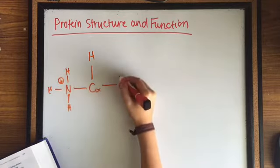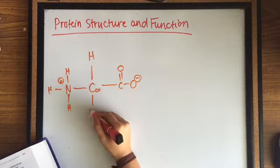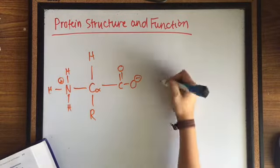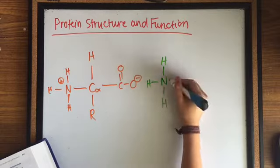Each amino acid has a hydrogen, a radical group side chain, an amino group that is positive and a carboxyl group that is negative.